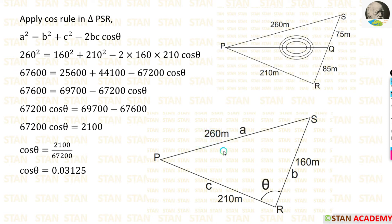Now let us apply the values in the rule. A is the distance between P and S, that is 260 meter. B is the distance between R and S, that is 160 meter. C is the distance of PR, that is 210 meter.